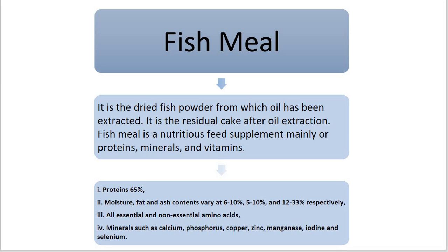The first by-product is fish meal. Fish meal is the dried fish powder which is formed after oil has been extracted — it is the residual cake after oil extraction. Fish meal is a nutritious food supplement which mainly contains proteins, minerals, as well as vitamins.